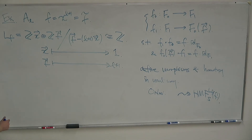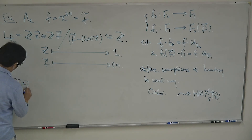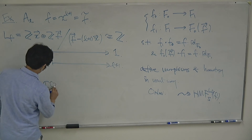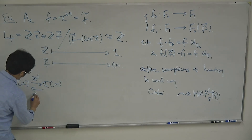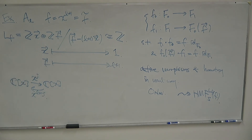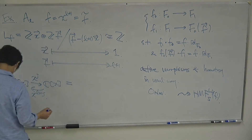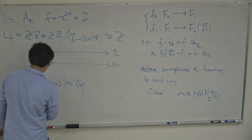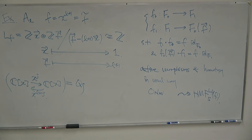The LF-grading gives a direction to the Auslander-Reiten quiver. When F = x^L, we have the Dynkin diagram A_L as the AR quiver. Forgetting the grading gives a matrix factorization; the grading then gives orientation, turning it into a directed Dynkin quiver.